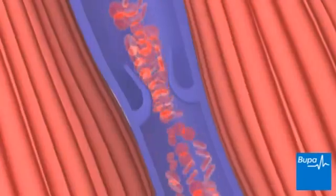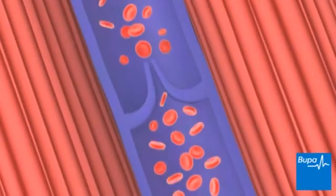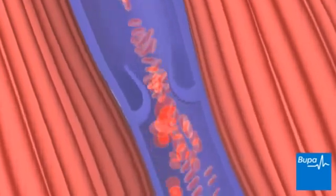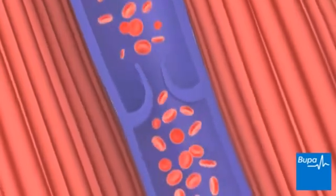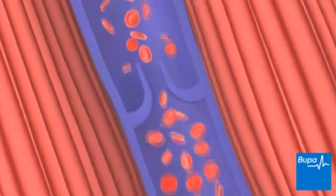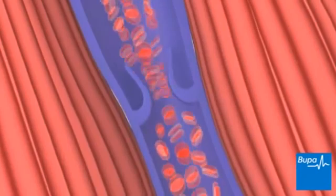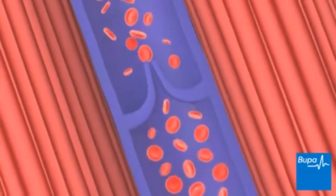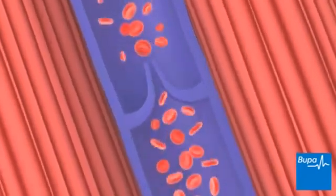The deep veins run between the muscles of the legs. Contractions of these muscles, when you move your legs and ankles, help to squeeze the blood back up towards your heart.